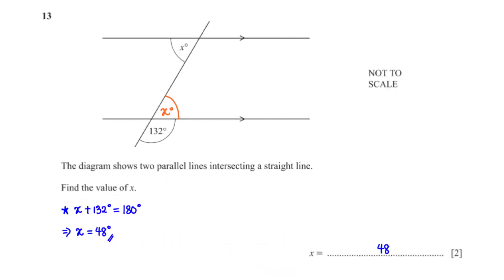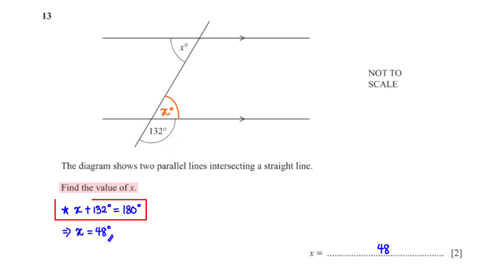The diagram shows two parallel lines intersecting a straight line. Find the value of x. These two are alternate angles, and alternate angles are equal. Angles on a straight line add up to 180 degrees. So x plus 132 degrees should be equal to 180 degrees. When we subtract 132 from both sides, we have x equals 48 degrees.